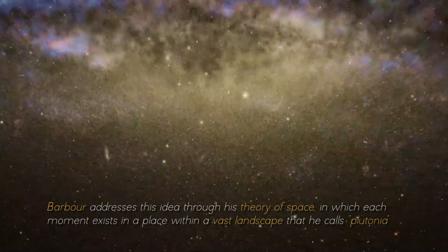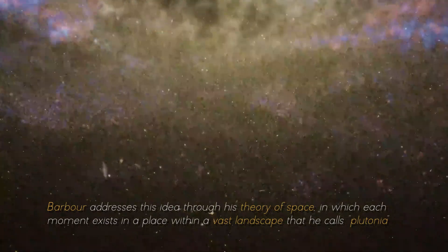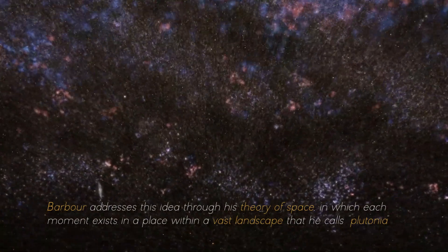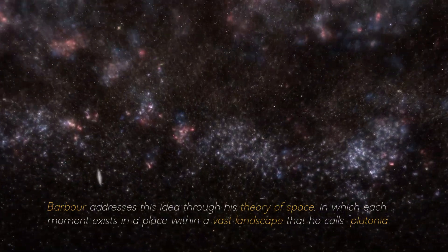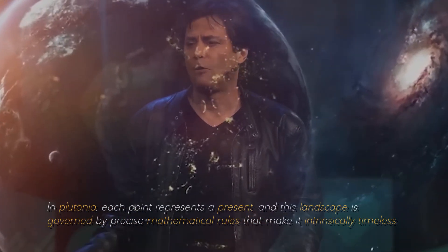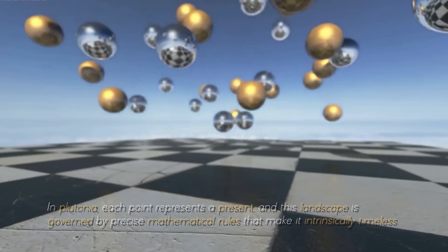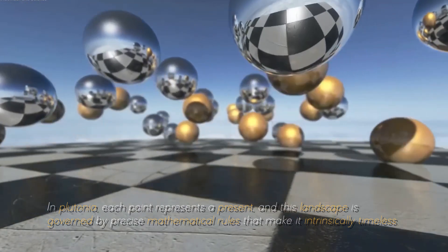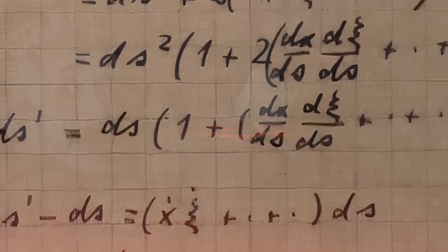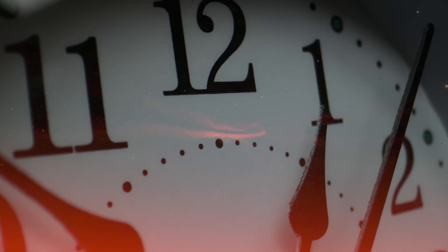Barber addresses this idea through the concept of space, in which each moment exists in a place within a vast landscape that he calls Plutonia. In Plutonia, each point represents a present, and this landscape is governed by precise mathematical rules that make it intrinsically timeless. This perspective is related to the renowned name of Albert Einstein, whose theory of space-time is fundamental to our current understanding of the universe.